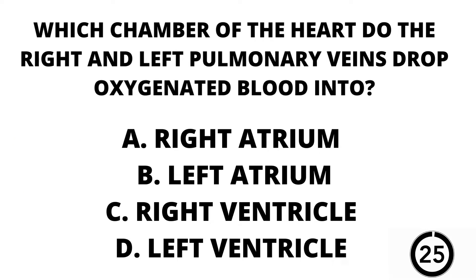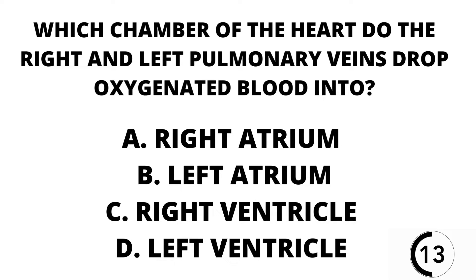Question number two. Which chamber of the heart do the right and left pulmonary veins drop oxygenated blood into? A. The right atrium. B. The left atrium. C. The right ventricle. Or D. The left ventricle.